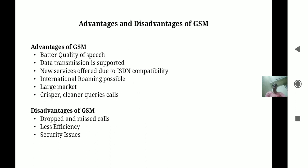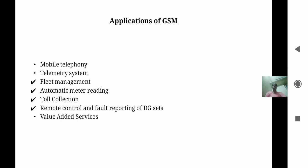Next are the advantages and disadvantages of GSM. Advantages include better quality of speech, supported data transmission, new services offered due to ISDN compatibility, international roaming, and a large market with cleaner calls. Disadvantages include high cost, less efficiency, and security issues.